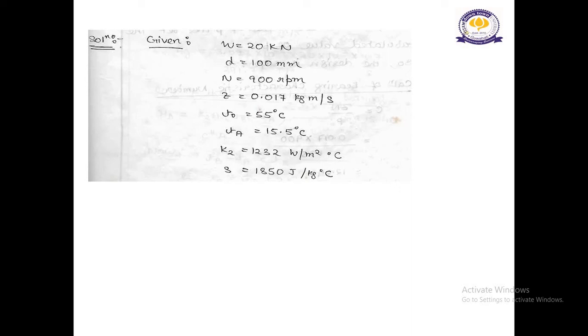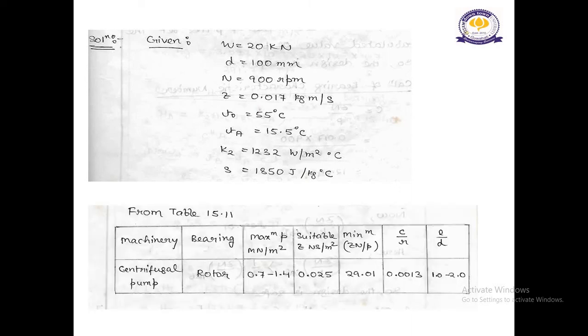Let's solve this one. Here, we have written the given data, W, D, N, Z, T0, TA, K2, and S. These are all given data. From the design data handbook, from table 15.11, this is the table of 15.11, we have taken the values from this table, from design data handbook.